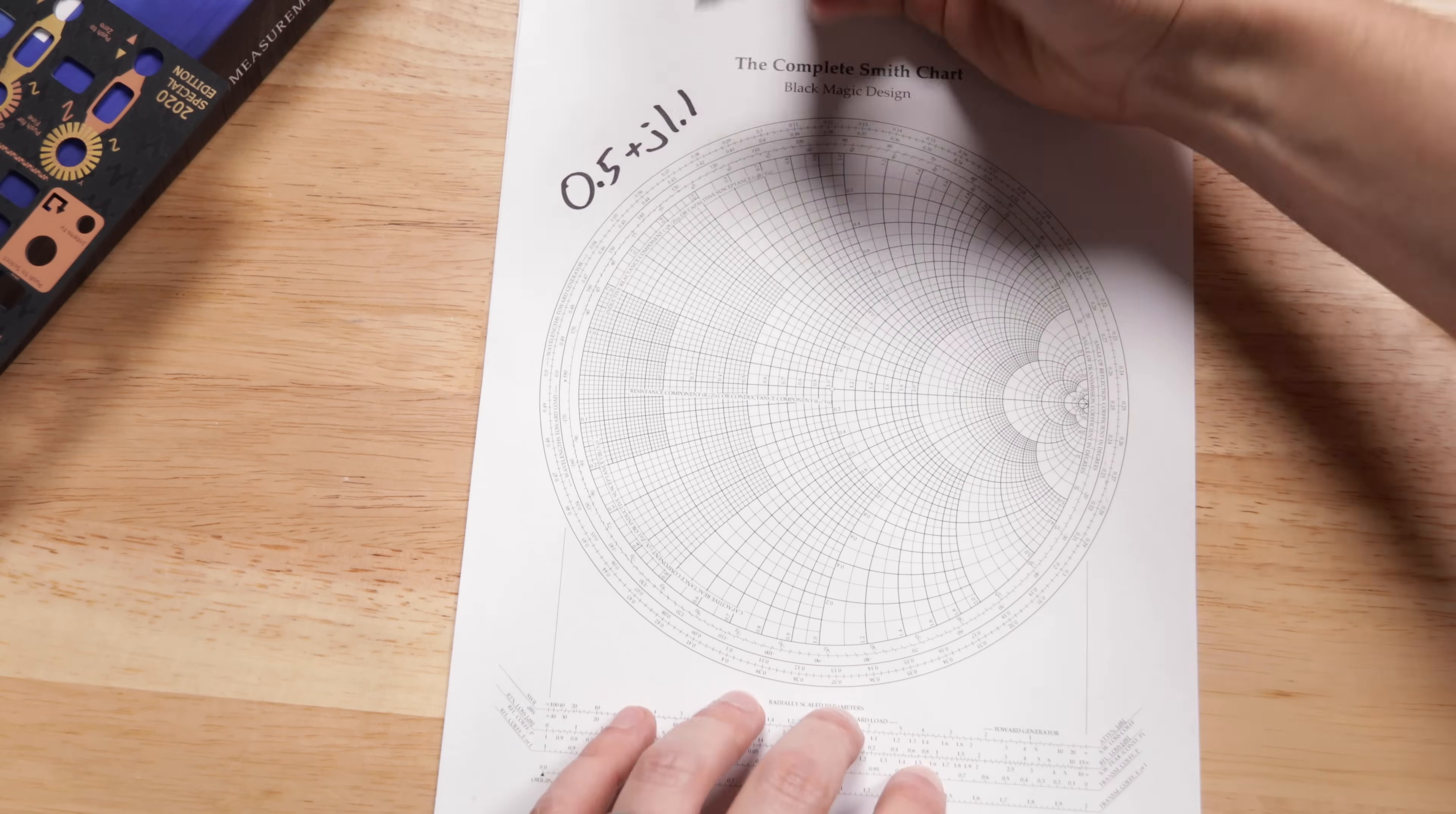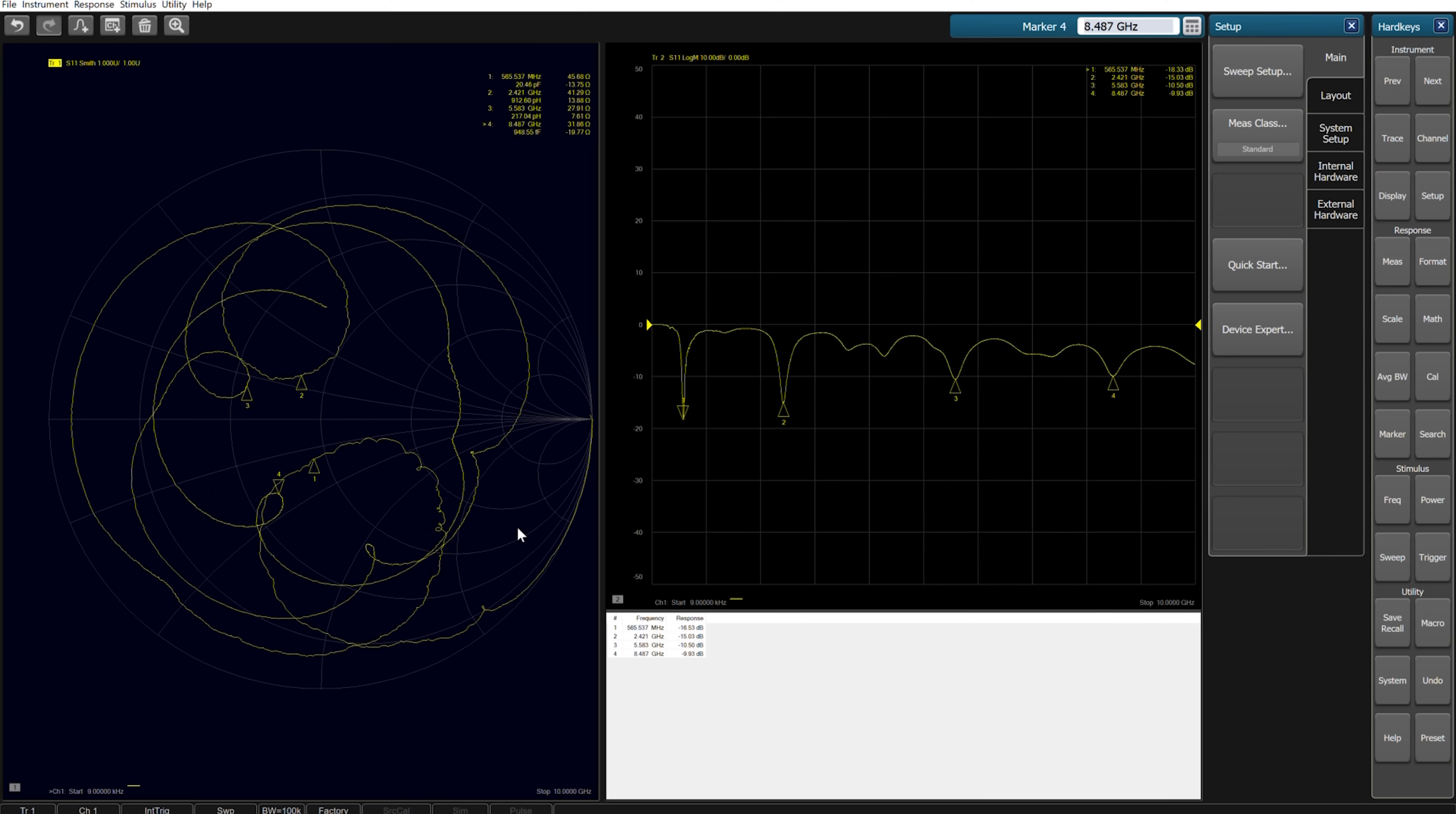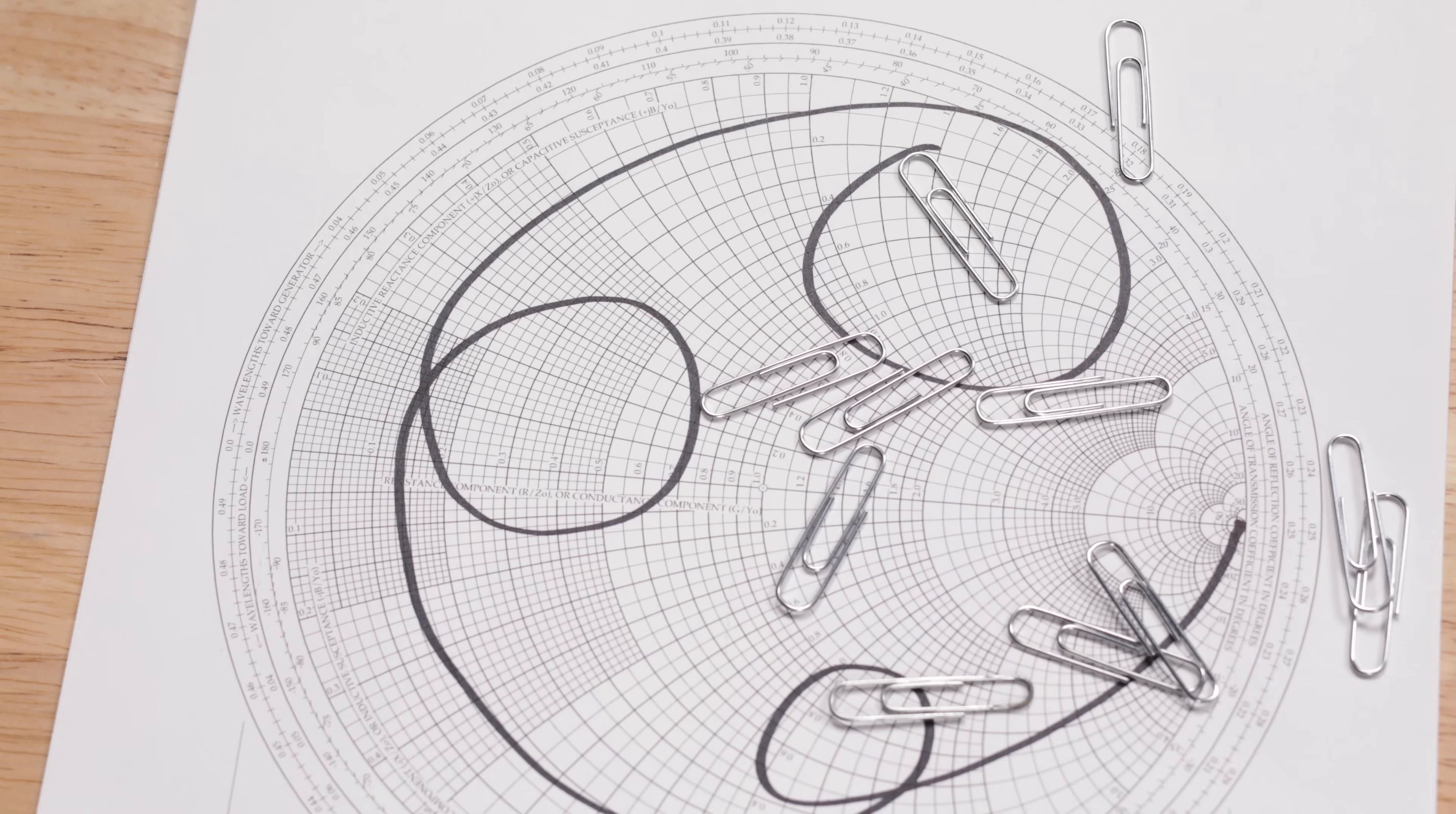We're going to explore Smith chart basics and then use that information to learn about the RF performance of a paperclip. Would this make a good antenna? At what frequencies does it resonate? A Smith chart makes this really easy to see.